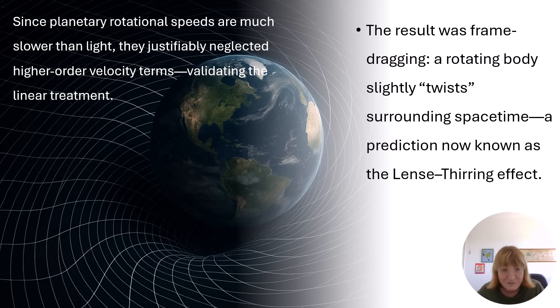The result was frame dragging: a rotating body slightly twists surrounding spacetime, a prediction now known as the Lense-Thirring effect.